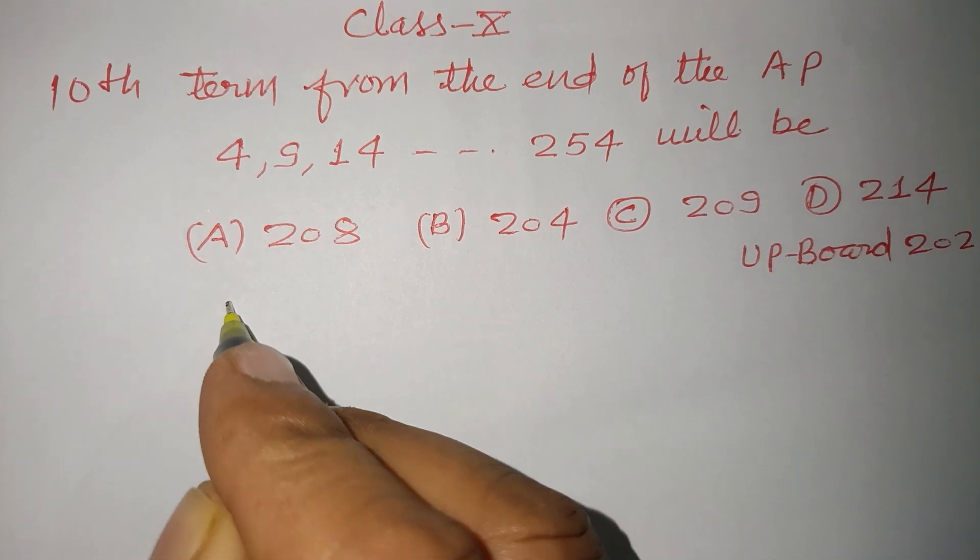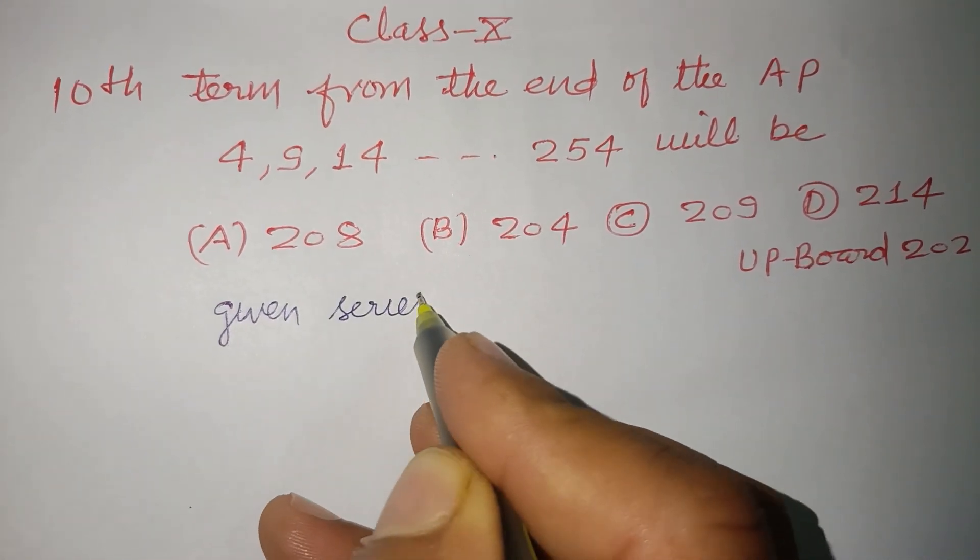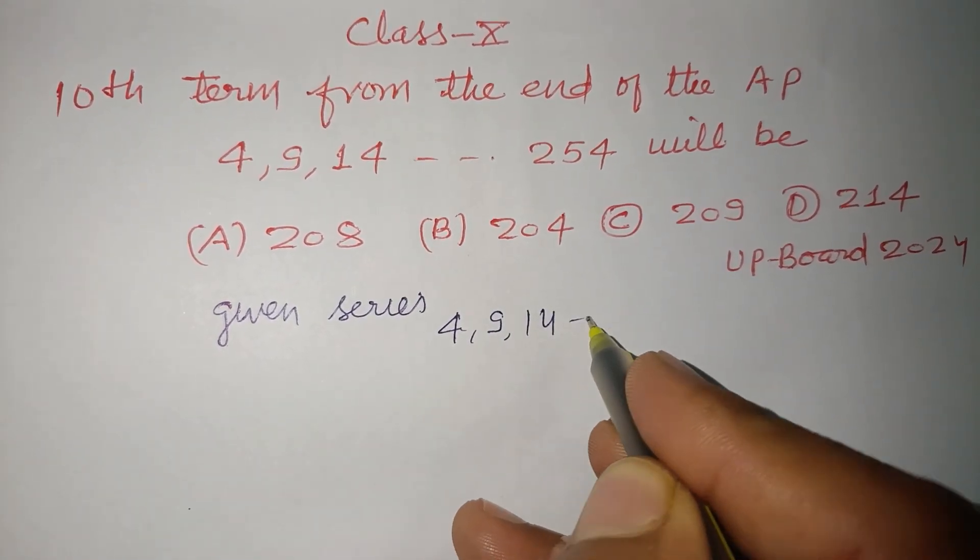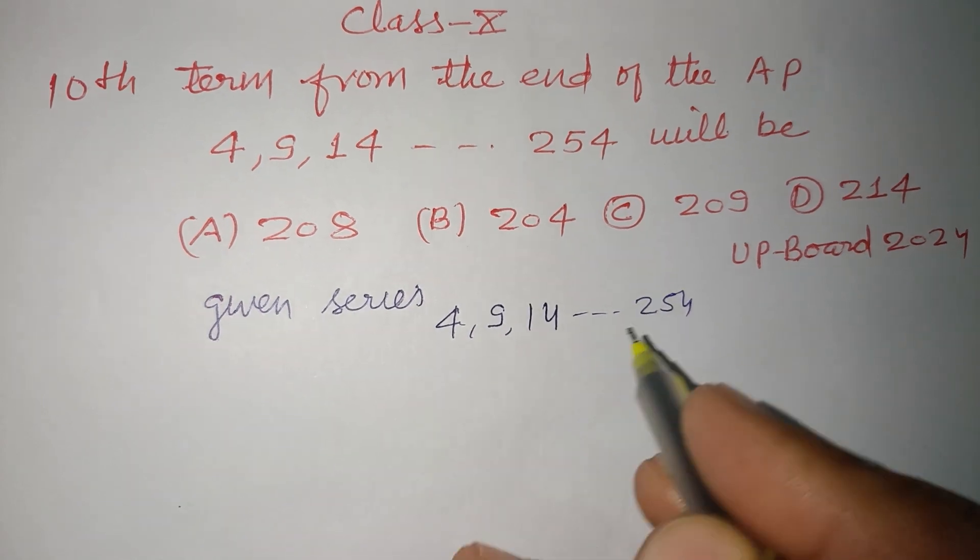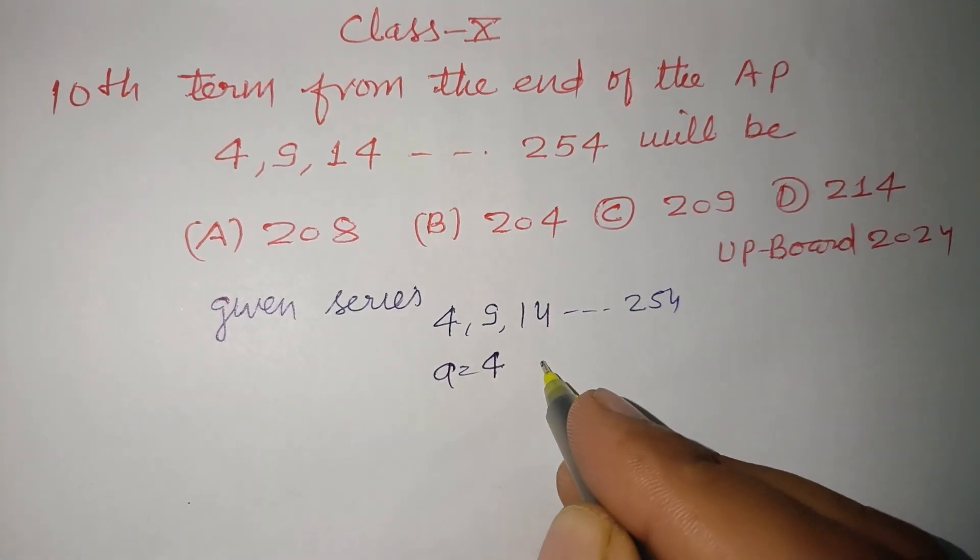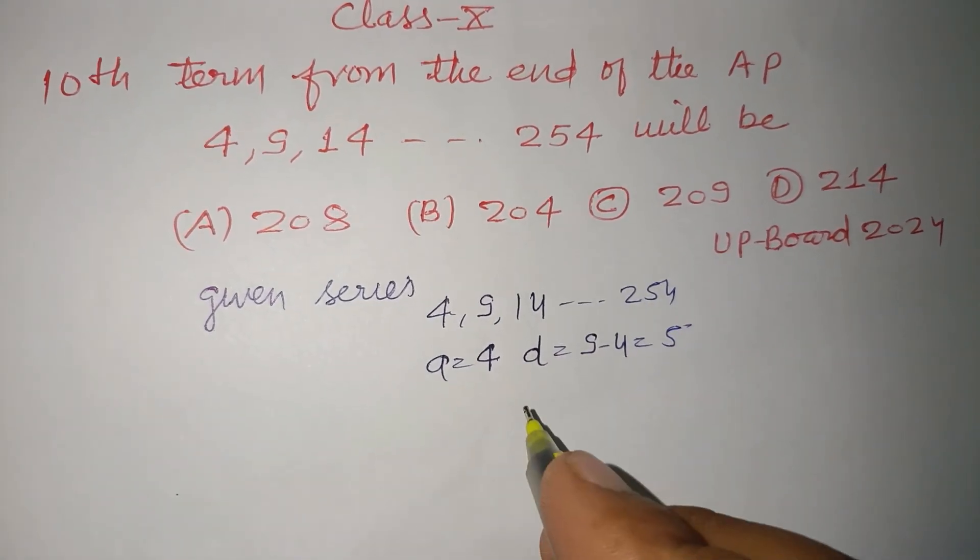Given series is 4, 9, 14, up to 254. So here, a is 4, first term. d is 9 minus 4, that is 5.